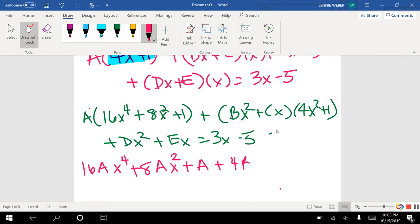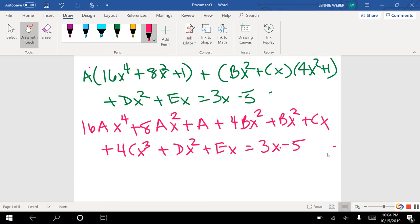So I'm going to get 4Bx squared, that's the first, and then outer, Bx squared, inner, Cx, last, 4Cx to the 3rd, and then I have my Dx squared plus Ex equals 3x minus 5.